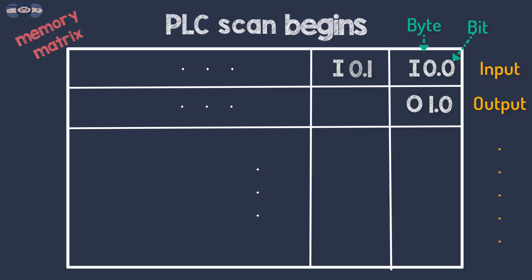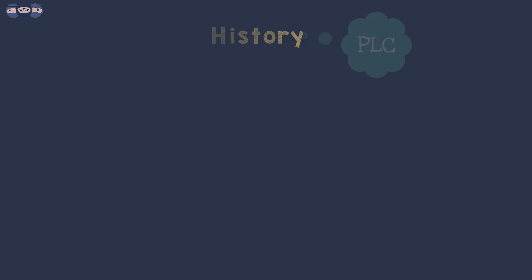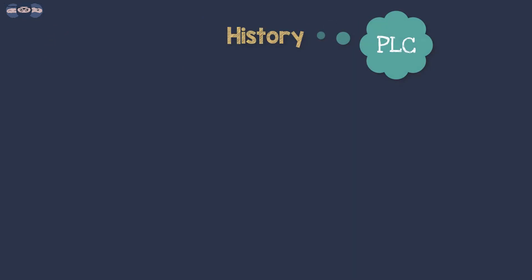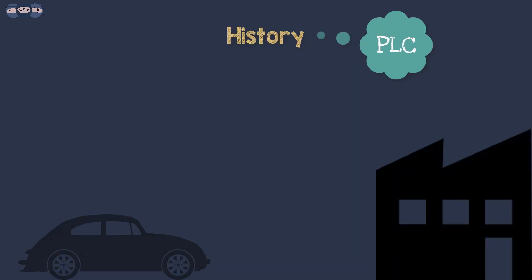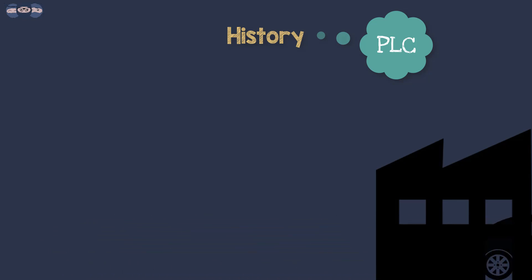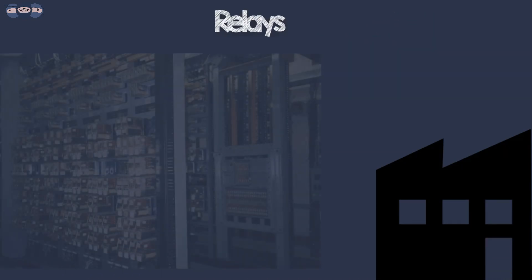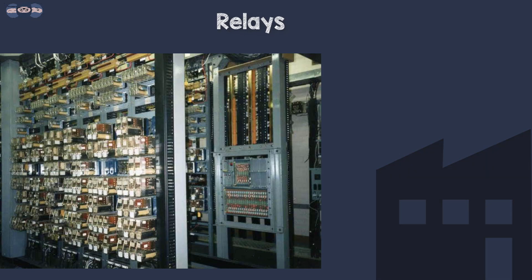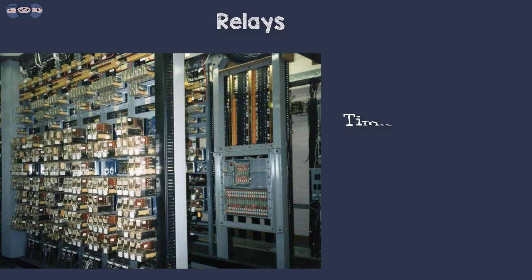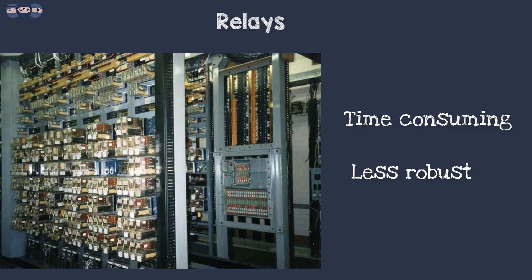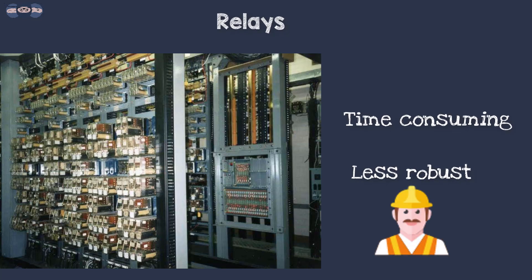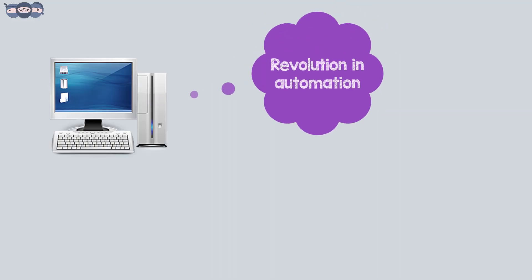A little history behind PLC — before PLCs were created, many industries such as the automobile industry used hundreds of thousands of relays to control their processes. This was very time-consuming and less robust. Sometimes electricians would individually rewire every relay to change a production system.